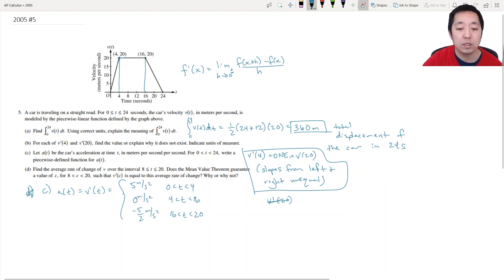V prime of 20, I was not correct here. I did 16. The y value is 20. V prime of 20 is actually equal to negative 5 over 2 meters per second squared, like we just calculated.